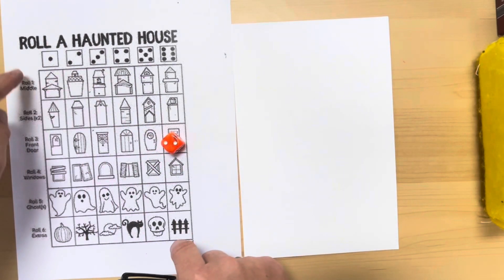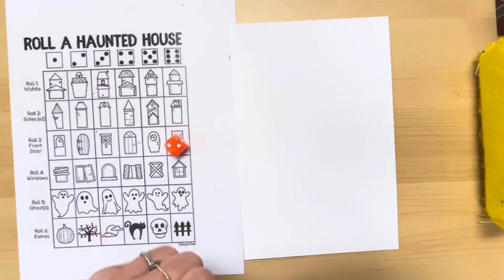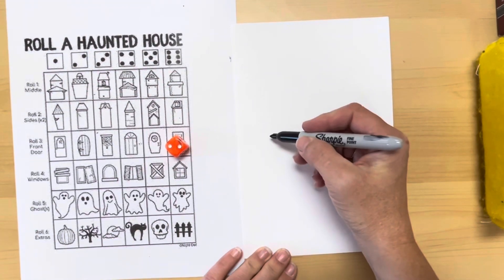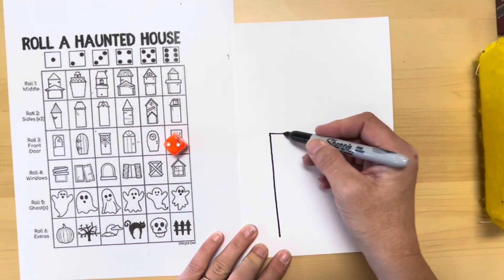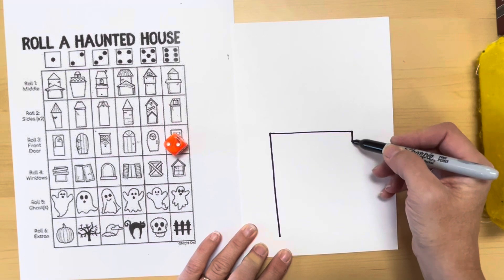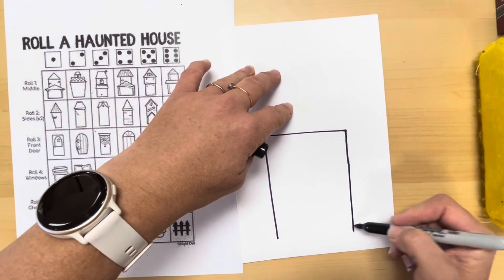So I'm gonna roll. I've got number two on roll one, so I'm drawing the house shape. I see it's kind of a rectangle. It gets a little narrower at the bottom, but not gonna stress over that. Mine's just gonna be more of a regular rectangle.